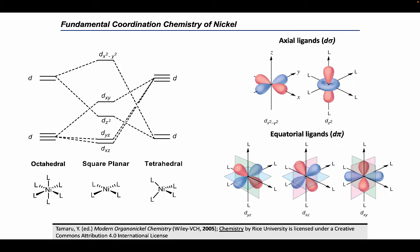Examining the d orbitals of nickel and their corresponding geometries, we see that the octahedral configuration splits the d orbitals into two groups: two that have sigma-bonding character with the axial ligands and three that have pi-bonding to the equatorial ligands. The molecular orbitals of the square planar geometry are more complicated as the orbitals which lie on the x and y axes rise in energy while those on the z-axis fall. Finally, the configuration for the tetrahedral complex is essentially the inverse of the octahedral, where the sigma orbitals are stabilized because they are at a distance from the ligands, whereas the pi orbitals are higher in energy due to direct overlap with each of the ligands.